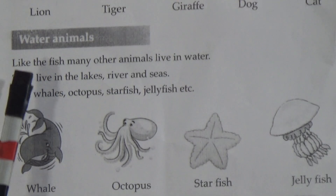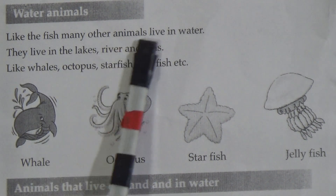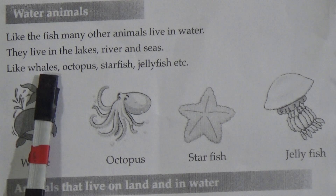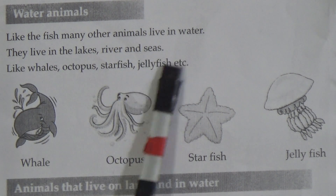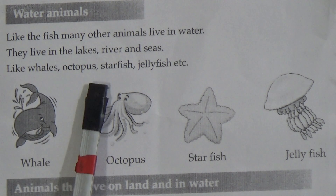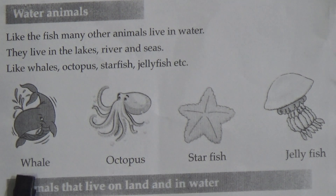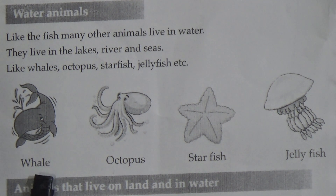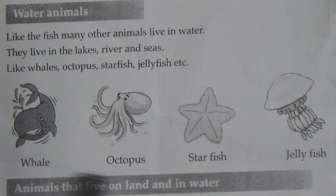Water animals — like fish, many other animals live in water. They live in the lakes, rivers and seas — like whales, octopus, starfish, jellyfish, etc. My dear students, now see the figure. This one is a whale, this one is an octopus, starfish, and this one is a jellyfish. All these animals live in water.